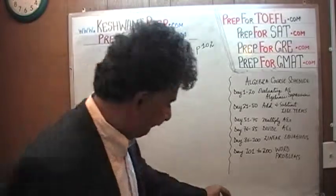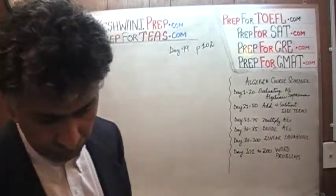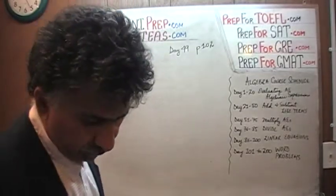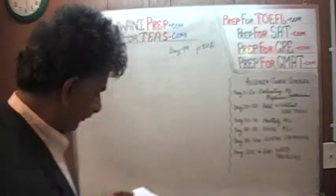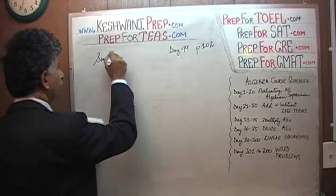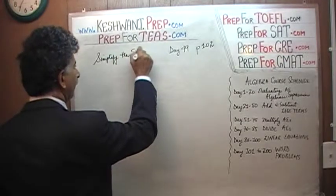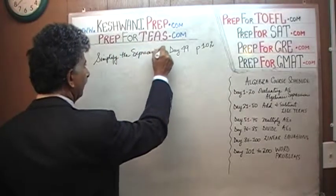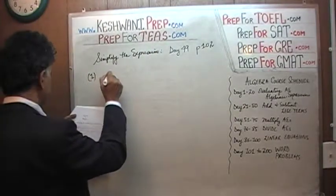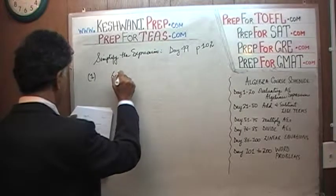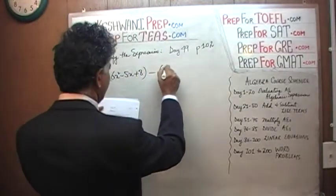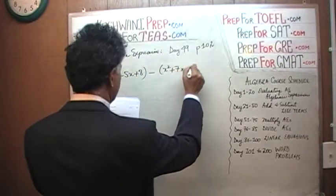We are dealing with some algebra problems here. The very first problem asks us to subtract one algebraic expression from the other, so let's put it down here. It says simplify the expression. The expression they give us in number one is: 6x squared minus 5x plus 8, minus the quantity x squared plus 7x minus 1.